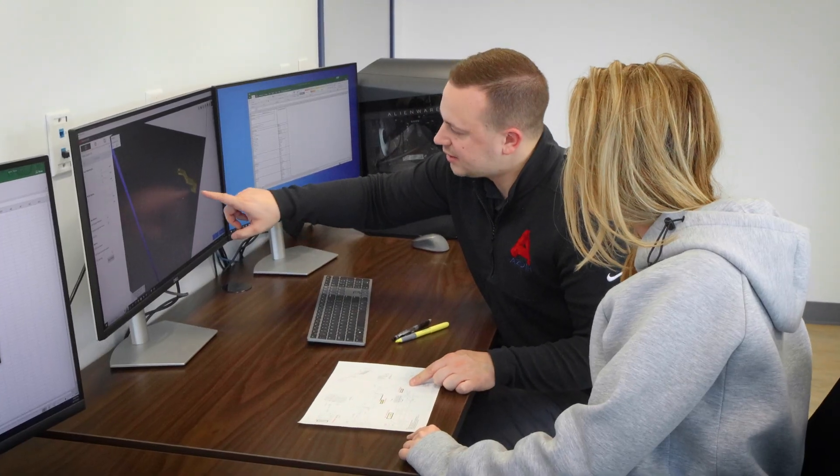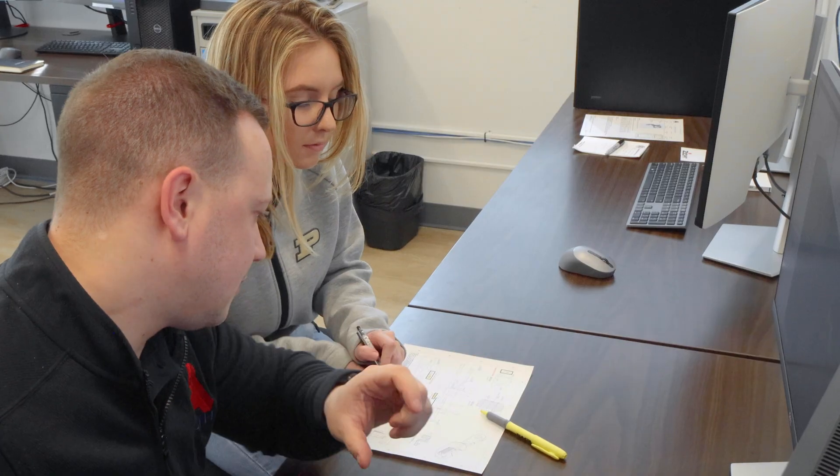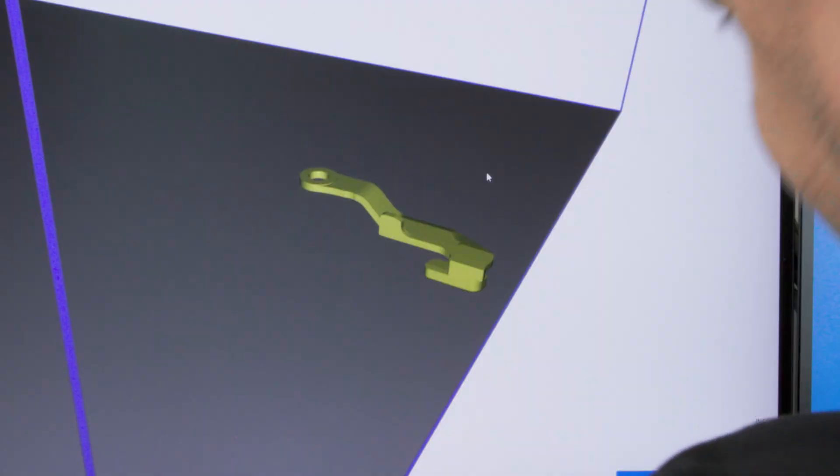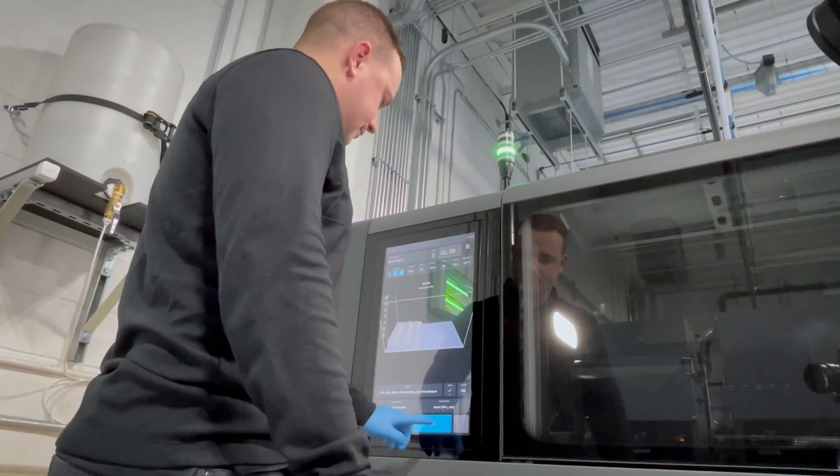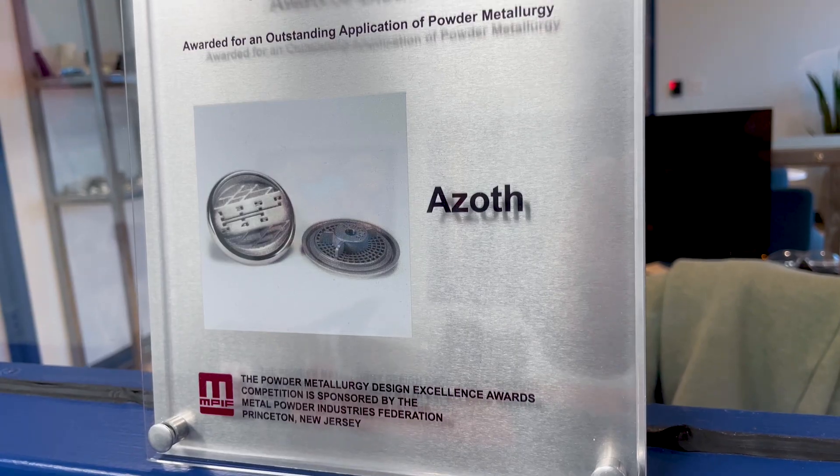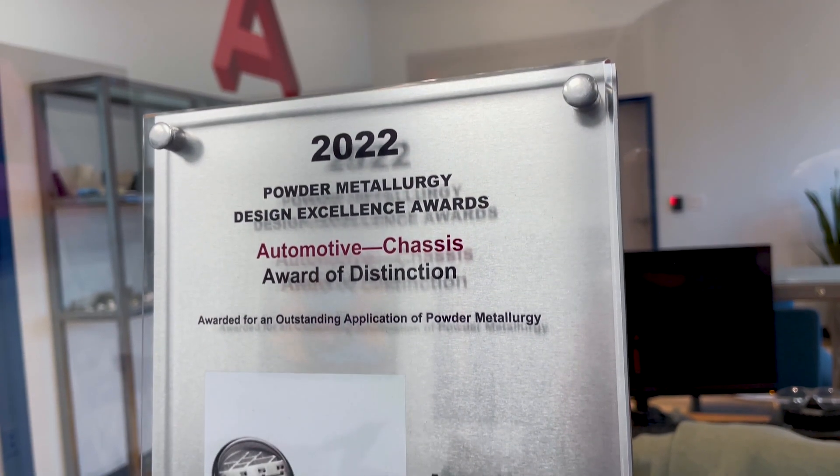When we work with customers, our constant goal is to be able to take a blueprint, redesign it for binder jetting, and give that back to our customers before they ever make a part so that we can set up production part approval process. And that's really Azoth's DNA when it comes to binder jetting and why many customers come to us for their serial production.